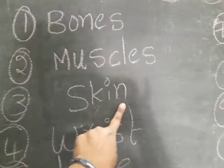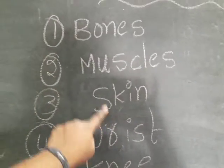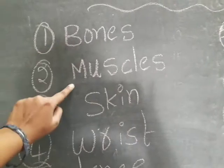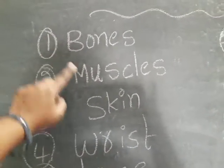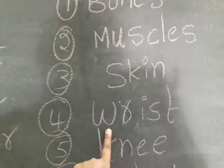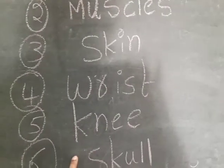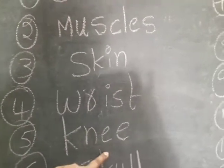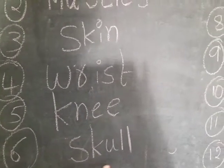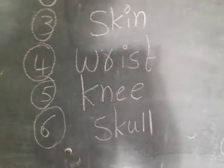Skin. S-K-I-N. Skin covers bones and muscles. Bones and muscles work together to move. Next: wrist — W-R-I-S-T. Wrist. Knee — K-N-E-E. Knee. K is a silent letter. Skull — S-K-U-L-L. Skull.